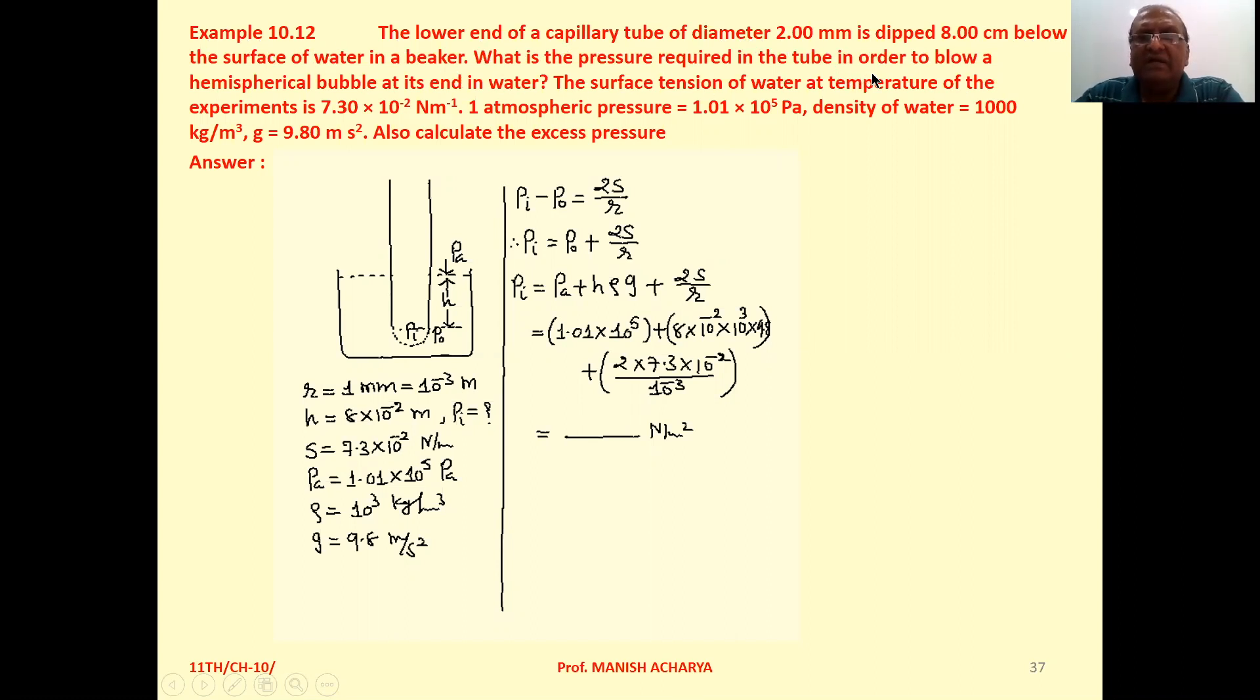What is the pressure required in the tube in order to blow a hemispherical bubble at its end in water? The surface tension of water at the temperature of the experiment is 7.3 × 10⁻² N/m.